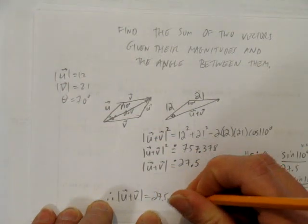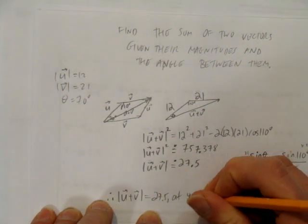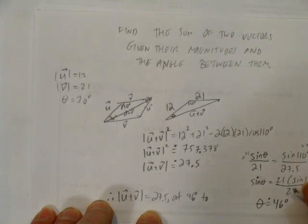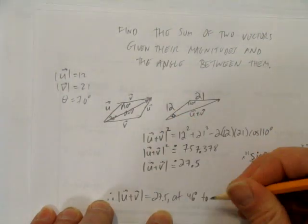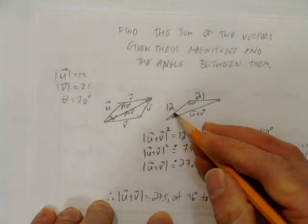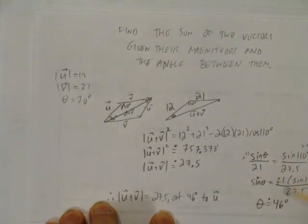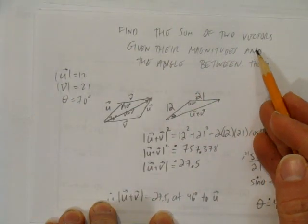and its direction is at an angle of 46 degrees to—and remember I picked this angle—which was with respect to vector u. So what we did here was find the sum of two vectors, given their magnitudes and the angle between them.